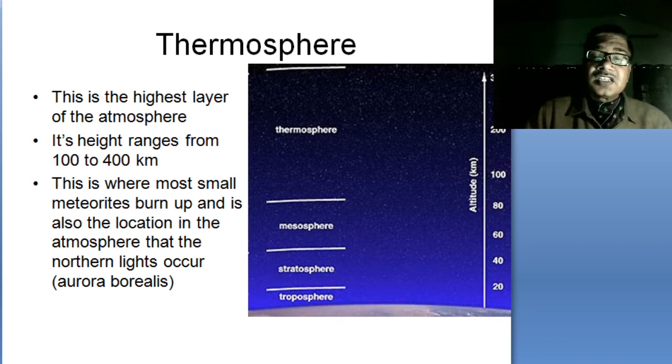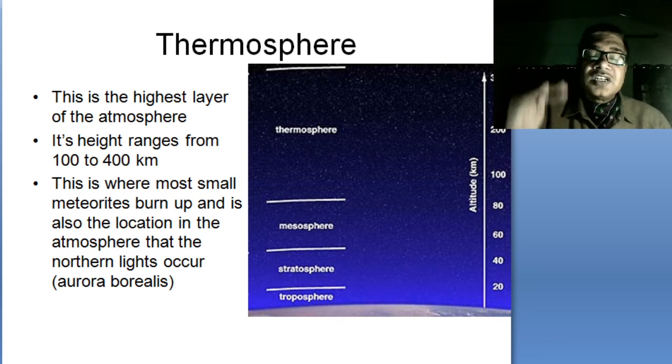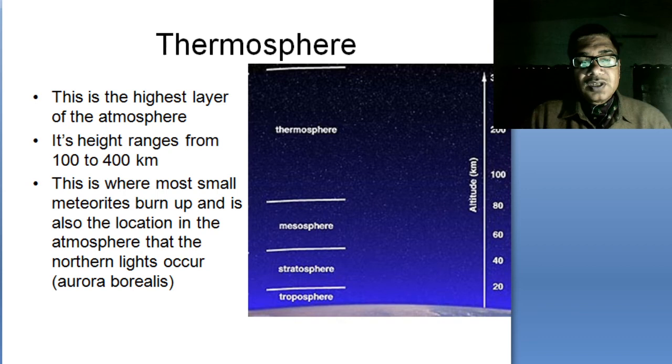If you go to areas beyond Norway, Sweden, in the northern hemisphere, you'll find these lovely northern lights. We call them as aurora borealis. All these are the formations taking place in thermosphere.